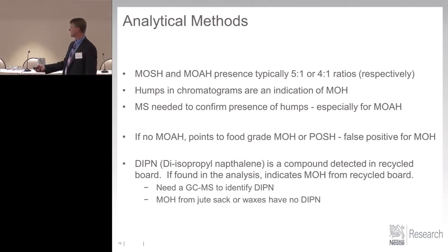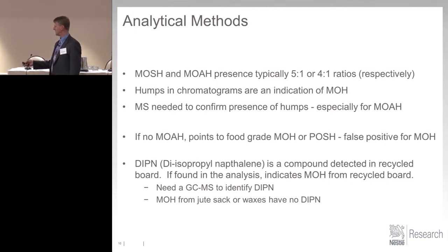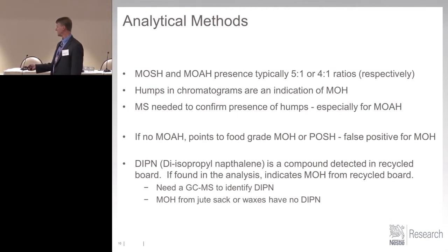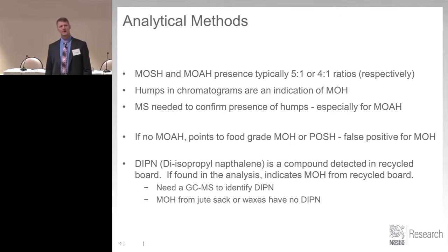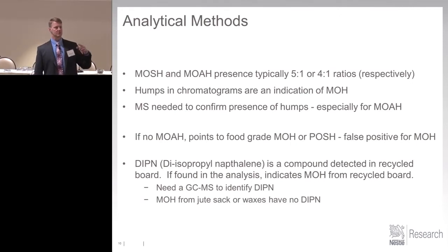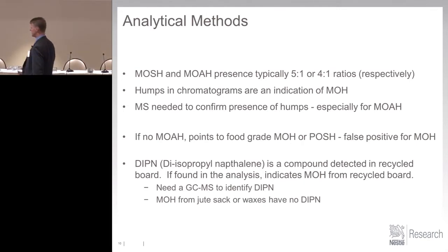MOSH and MOAH are typically in a 5-to-1 or 4-to-1 ratio. In the chromatograms, there are humps that are an indication of mineral oil. MS is needed to confirm the presence of the humps, especially for MOAH. DIPN is a compound from recycled board — it's a useful marker compound to say this mineral oil came most likely from recycled board as opposed to jute sack.